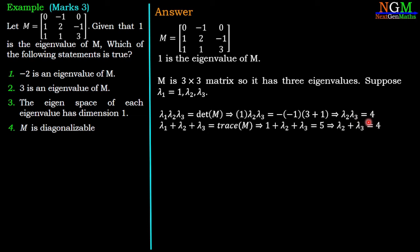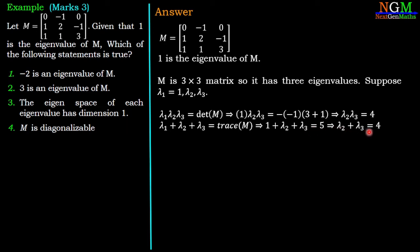Using the property that the sum of eigenvalues equals the trace of M: λ1 + λ2 + λ3 = trace(M) = 0 + 2 + 3 = 5. Since λ1 = 1, we get λ2 + λ3 = 4.